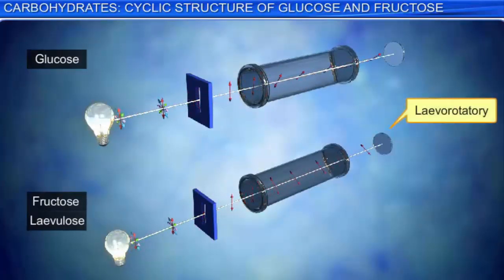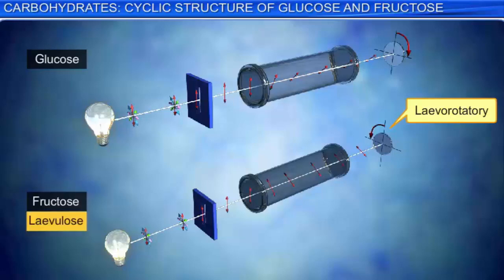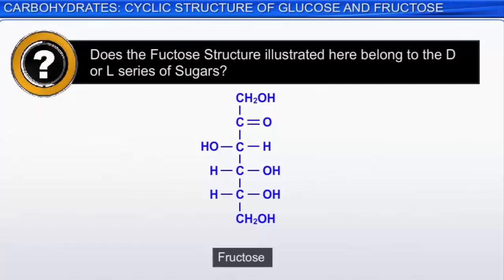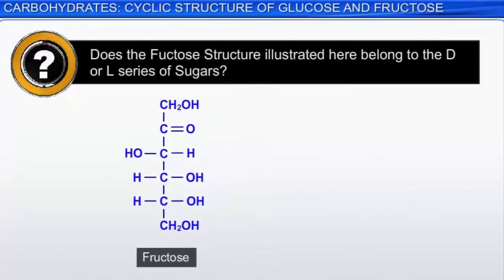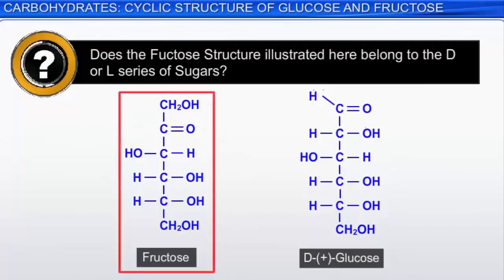Does the fructose structure illustrated belong to the D or L series of sugars? As fructose can be chemically correlated to dextrorotatory glucose with D-configuration, it also belongs to the D series. Hence, fructose is levorotatory with D-configuration. Its open chain structure along with the name D-minus-fructose is illustrated here.